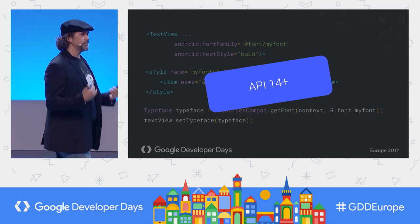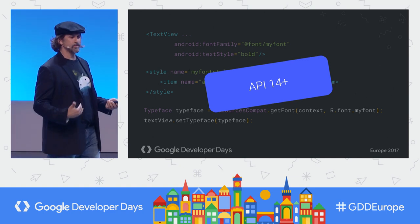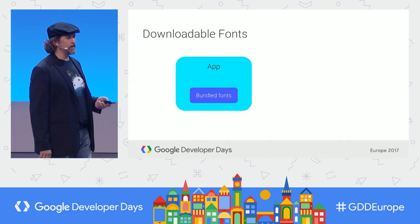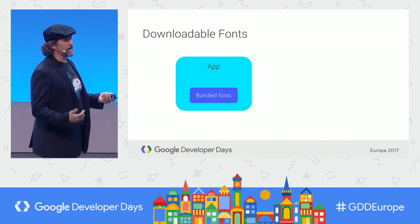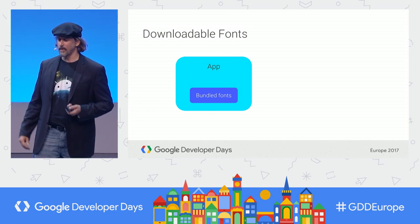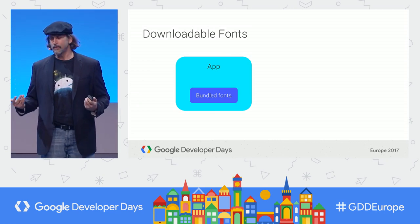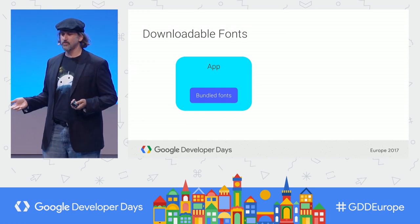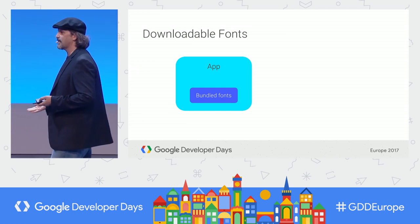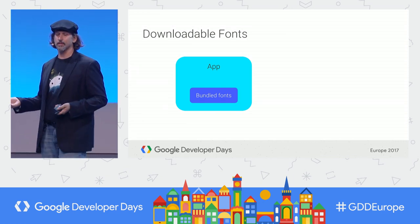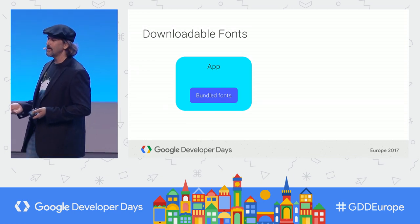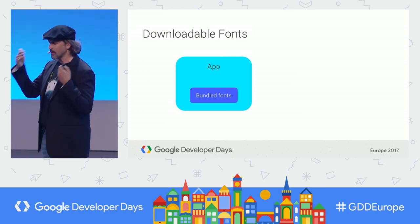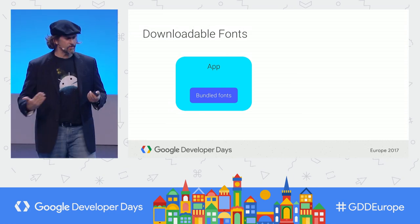This is supported on API 14 and above with the support library, so go out there and use more fonts. The only problem is that fonts actually bloat the size of your app. The top 25 fonts in Google Fonts average 500 kilobytes or more and they're not optimized for mobile necessarily.